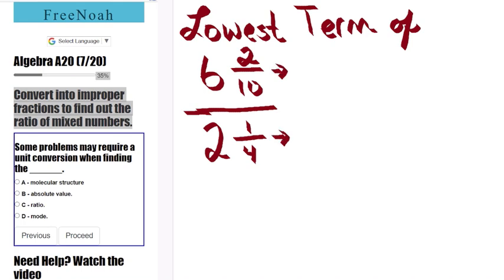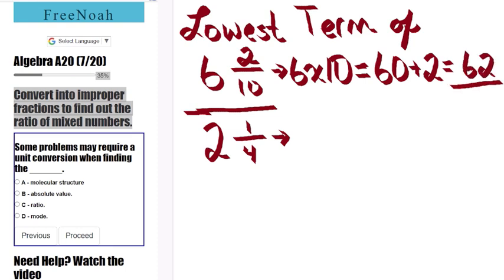Let's start with the numerator here. 6 times 10, that'll give us 60. 60 plus 2, that'll give us 62. 62 over 10.